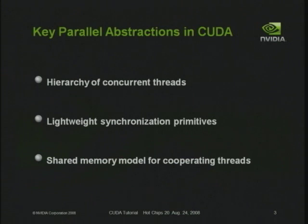CUDA provides three key abstractions for parallelism. First, it asks you to write a program consisting of many parallel threads structured in a particular hierarchical structure. It also provides very simple, lightweight synchronization primitives to synchronize these threads — obviously necessary for any non-trivial parallel program. And it provides a fairly simple shared memory model for how threads will communicate with each other.